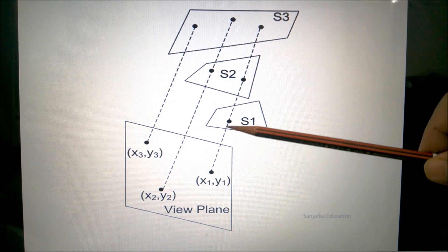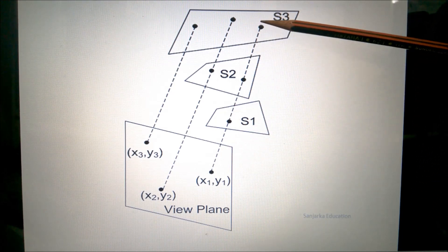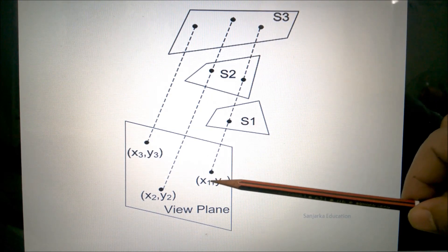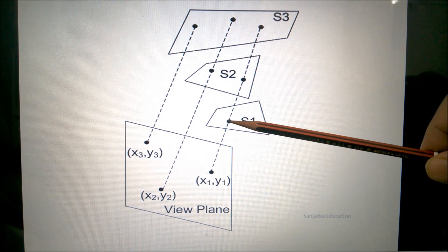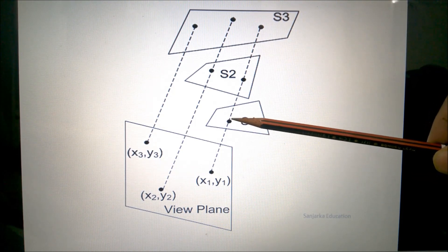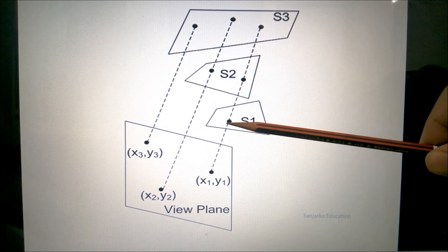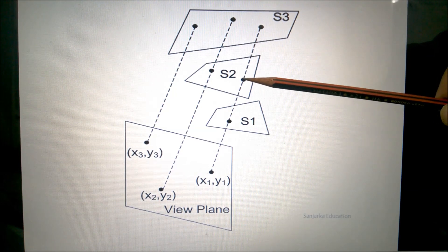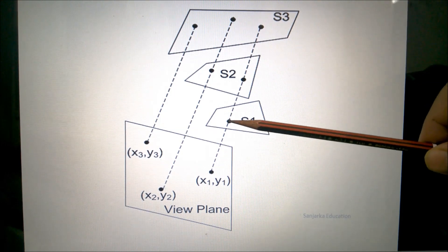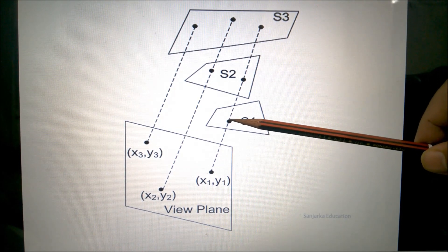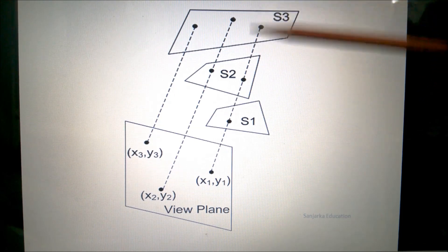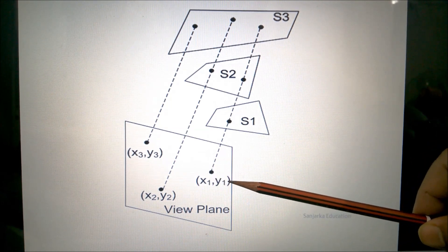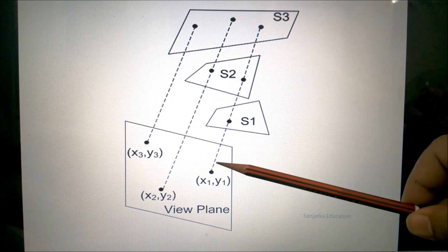From this pixel, an orthogonal projection is shown. Corresponding to X1 and Y1, there will be a pixel on surface S1 where the X and Y coordinates remain the same. The same applies for S2 and S3 — the X and Y coordinates remain the same. But the Z coordinate will be different for S1, S2, and S3, because in orthogonal projection the X and Y coordinates do not change; only the Z coordinate changes.